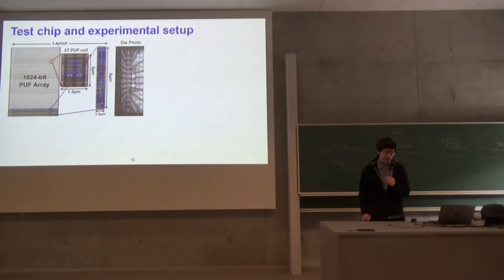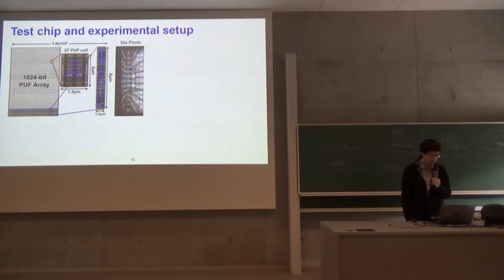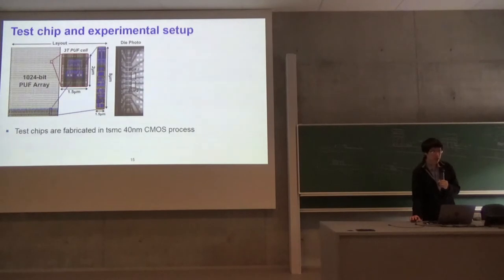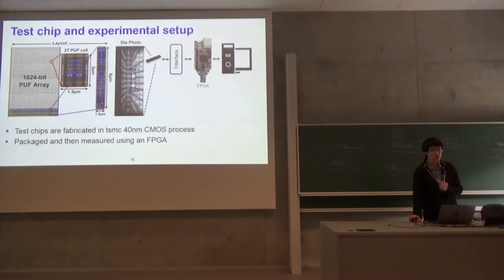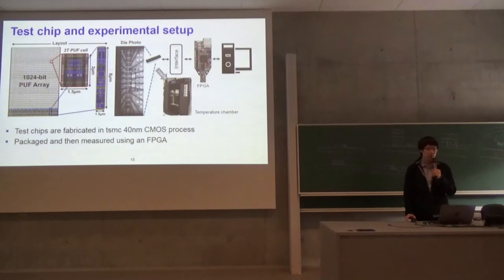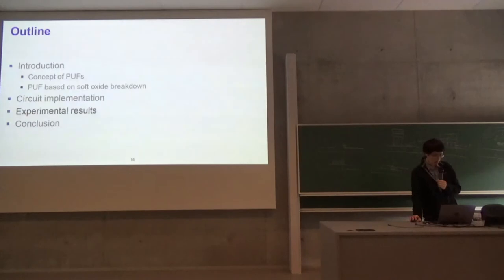Here's the test chip structure and experimental setup. This shows the layout of the circuit with two PUF arrays in the center. This shows the dimensions of the sense amplifier and PUF cells, which are really compact. They're fabricated in 40 nanometer process and packaged. We measured using FPGAs and put chips inside a temperature chamber to measure at different temperatures.